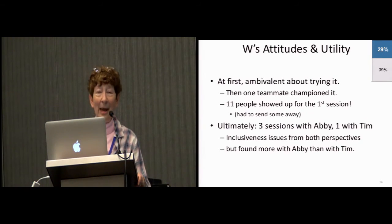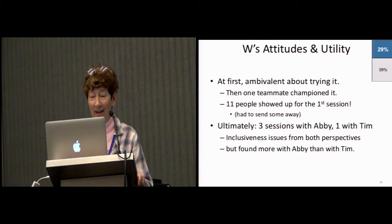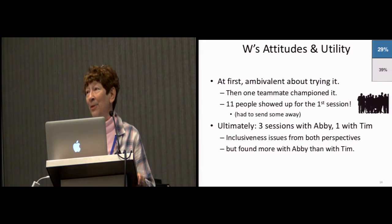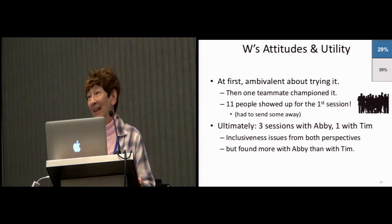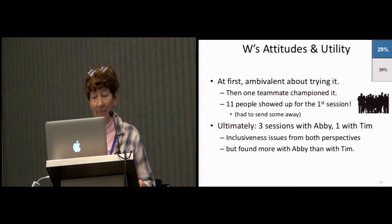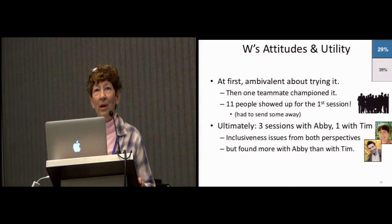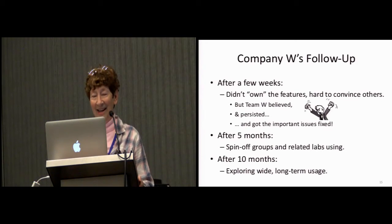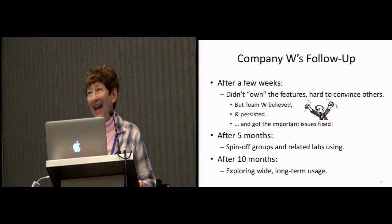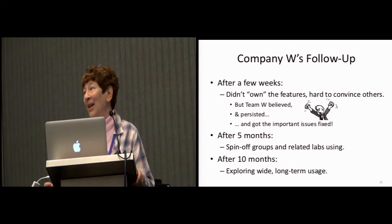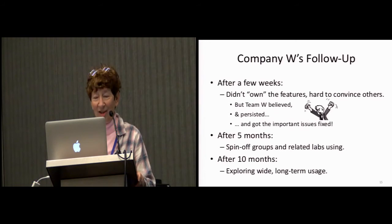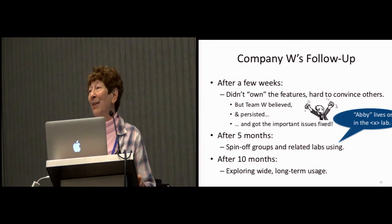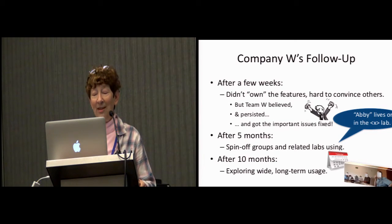Company W was a little ambivalent about trying it, but one teammate championed it, and by the time they had the session, 11 people showed up — too many for the room, and they had to kick some out. Ultimately they did four sessions: three with Abby and one with Tim. They found inclusiveness issues from both perspectives, but more with Abby than with Tim. One of them said, 'We're all a bunch of Tims, so of course it was a better fit for the Tims.' After a few weeks, we checked back. It turns out Team W didn't own the software, so they had to rant and rave to get somebody else to make changes — but they believed, they kept going, and got them fixed. Five months later it had spread among some of their spin-off labs. Ten months later, they're looking at company-wide usage.